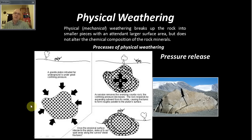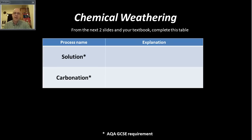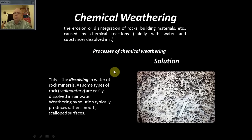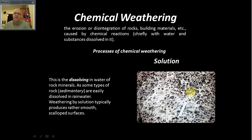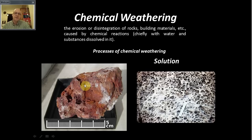Moving on to chemical weathering: chemical weathering is essentially dissolving, and dissolving is given the name 'solution.' Carbonation is just a specialist form of solution. All rainwater is slightly acidic — it may have carbon dioxide, sulfur dioxide, sulfur trioxide, or nitrous oxides dissolved in it. Just like dropping vinegar on marble chips, you get dissolving taking place, with pitting where the material has found a line of weakness. On this beautiful pyrite example, you can see solution taking place on igneous rocks just as much as on sedimentary rocks.